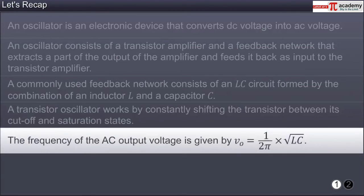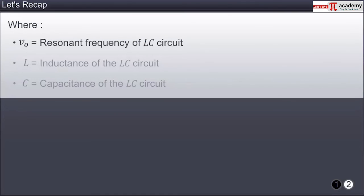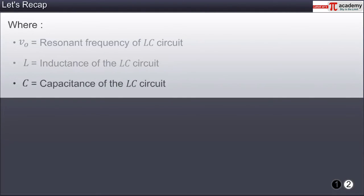The frequency of the AC output voltage is given by ν₀ = 1 / (2π√(LC)), where ν₀ is the resonant frequency of the LC circuit, L is the inductance of the LC circuit, and C is the capacitance of the LC circuit.